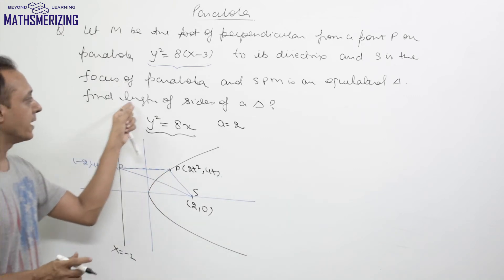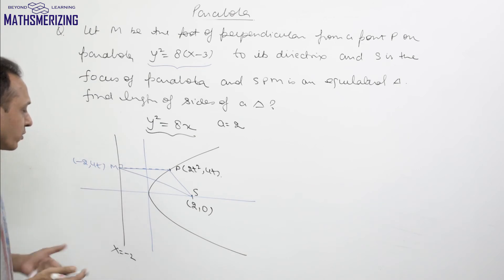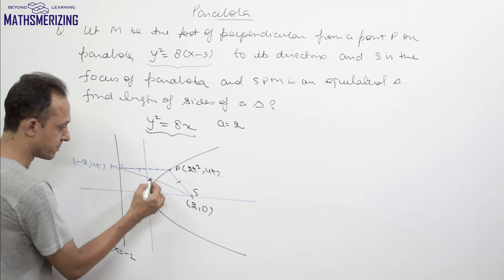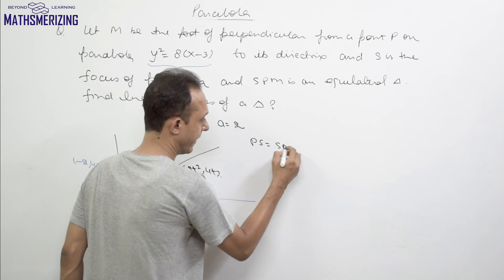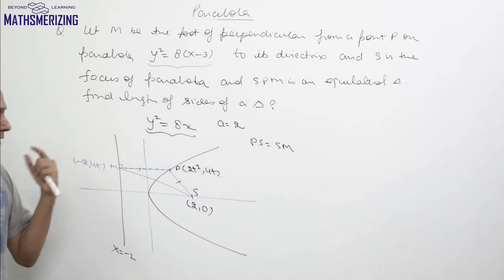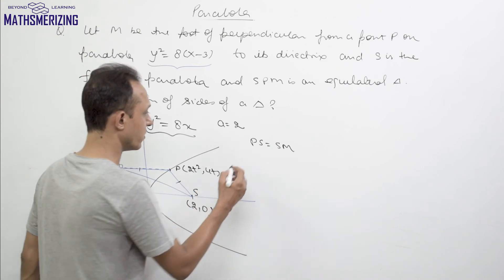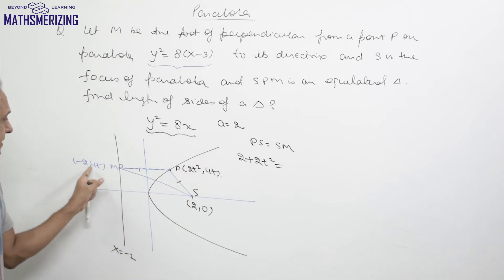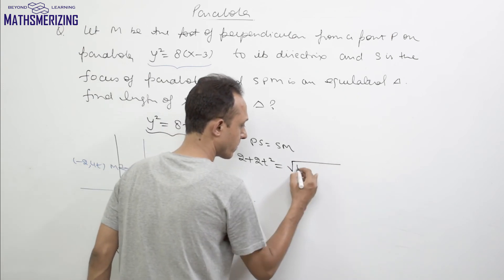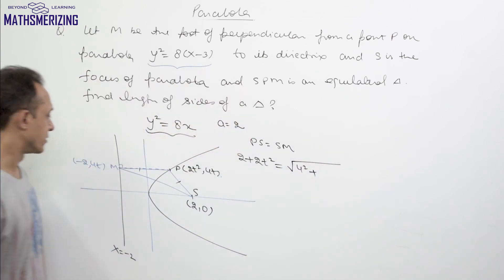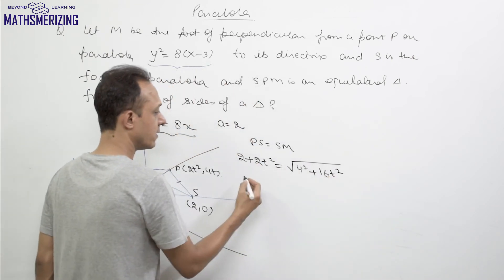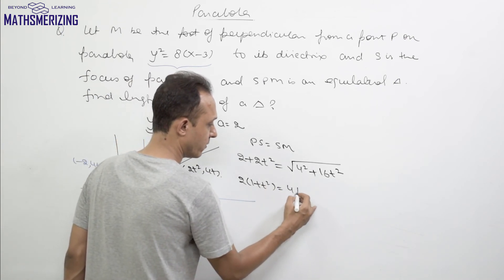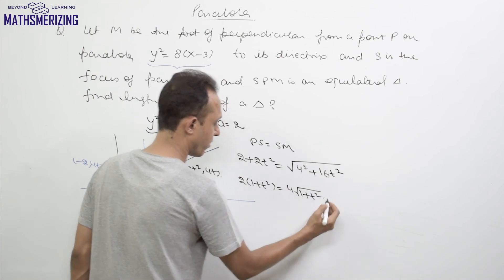To find the side of the equilateral triangle, we use the parabola property that PS = PM, so these two sides are already equal. We need PS = SM. PS is the focal distance, which equals a + at² = 2 + 2t². SM is the distance between S(2, 0) and M(−2, 4t), which equals √(4² + 16t²) = √(16 + 16t²) = 4√(1 + t²).